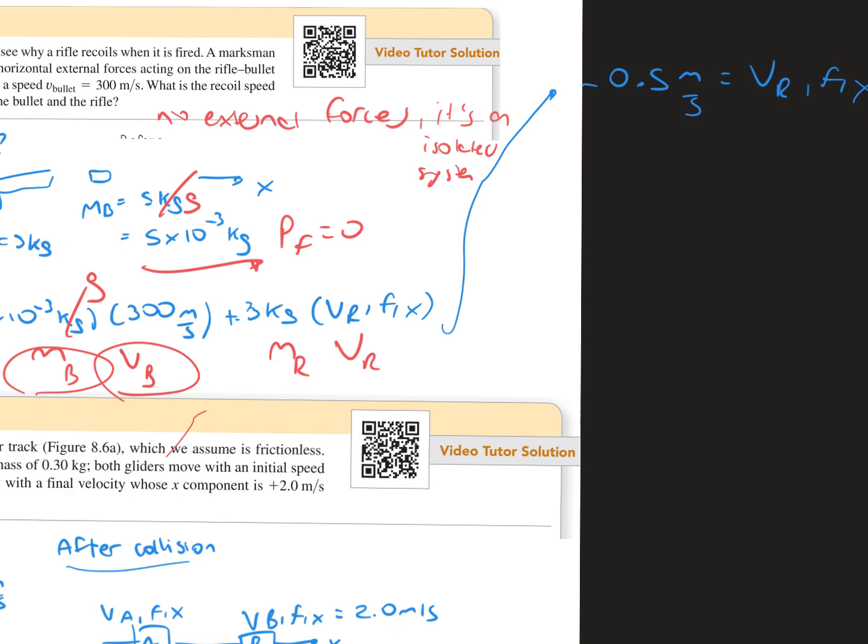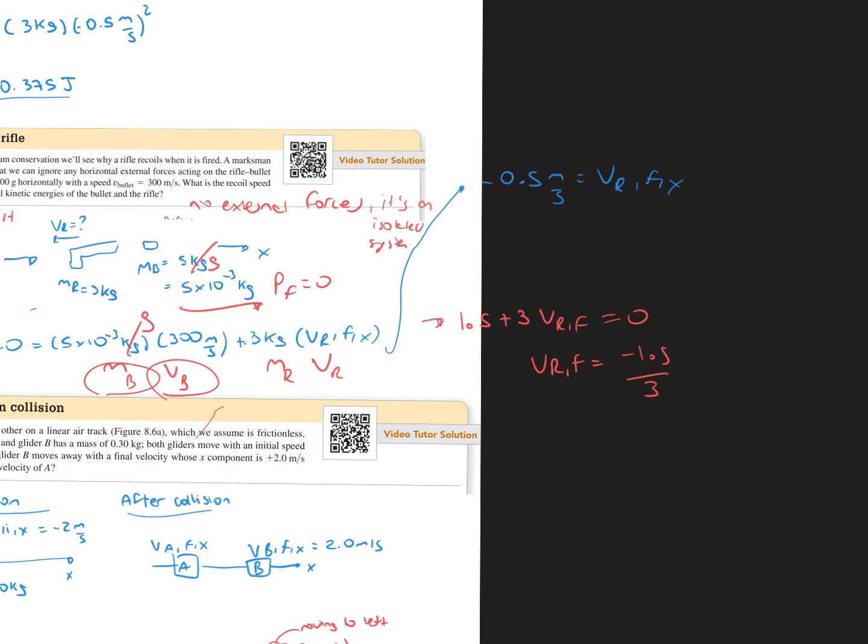We have 1.5 plus 3 multiplied by the final velocity of the rifle is going to be equal to 0. So we just divide negative 1.5 divided by 3. That should give us negative 0.5 meters per second for the final velocity of the rifle.